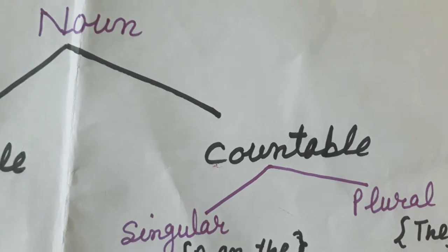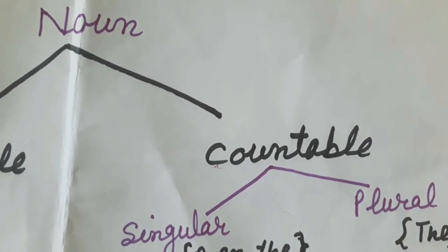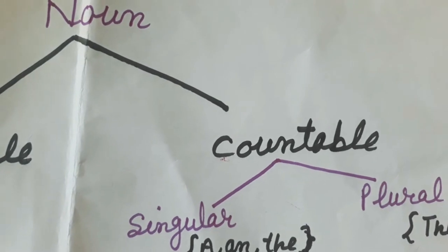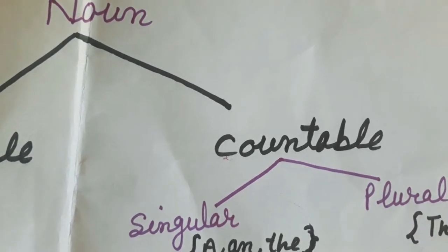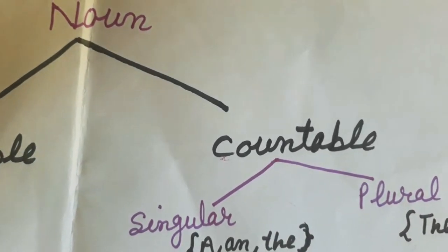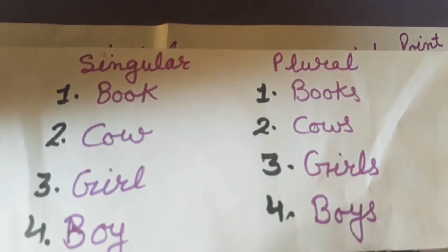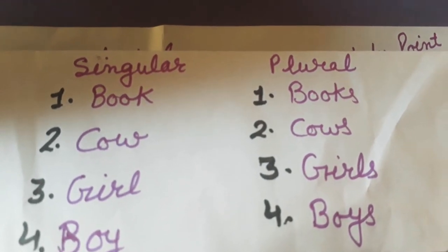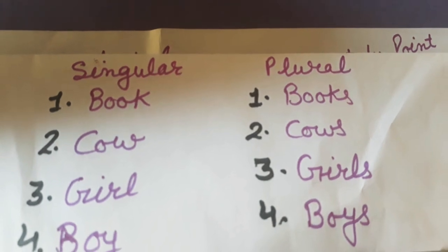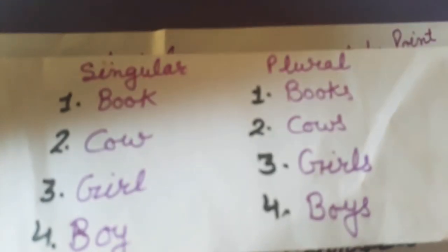Countable nouns are the nouns which we can count. Countable noun is divided into two parts: first singular and second plural. Examples of singular are: book, cow, girl, boy, etc. Examples of plural are: books, cows, girls, boys, etc.